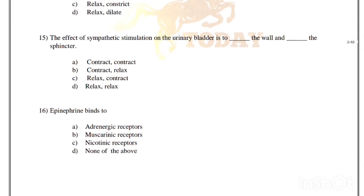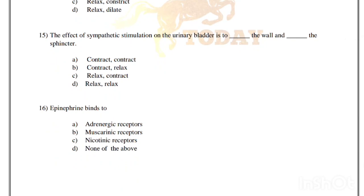The effect of sympathetic stimulation on the urinary bladder is to relax the wall and contract the sphincter. Option C is the right answer.